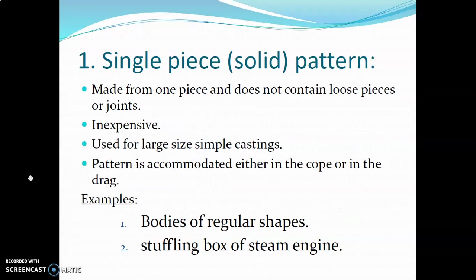First, we will start from the single piece pattern. It is made from one piece and does not contain any loose piece or joint — it is a very solid, straight one-piece pattern. It is very cheap and used for large size single castings. The pattern is accommodated either in the cope or in the drag. It has only simple construction. Examples include a body of regular shape and the stuffing box of a steam engine.